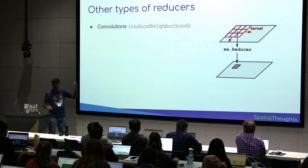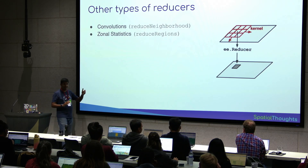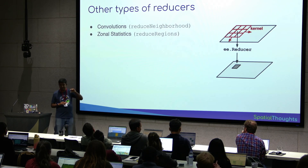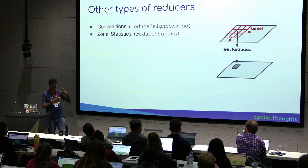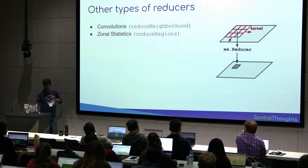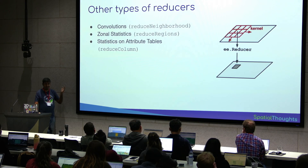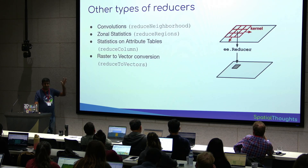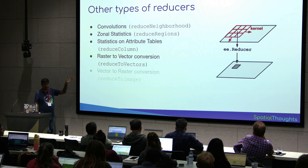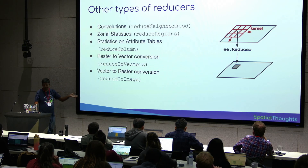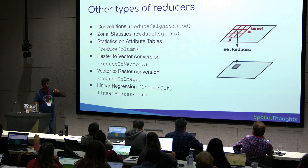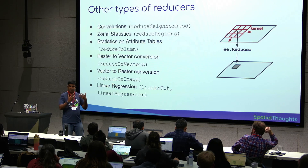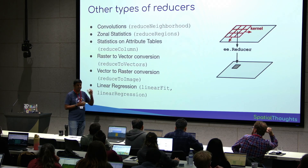There's a function called reduce neighborhood you can run to do convolutions. If you want to do zonal statistics — I have a shapefile of polygons, I want average NDVI for each polygon — you run reduce regions (plural), specifying a feature collection, and it gives you the average NDVI in each polygon. If you have vector data and want to sum a column, you can do reduce column. Raster to vector is reduce to vectors. Shapefile to image is reduce to image. Linear regression is ee.Reducer.linearFit or ee.Reducer.linearRegression. All of those functions are implemented as reducers — so when you don't know how to do something, reducers will likely help you find it.